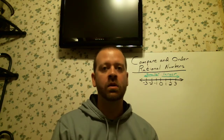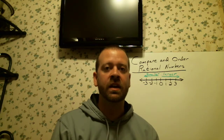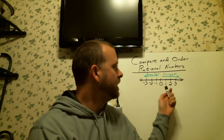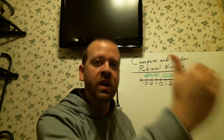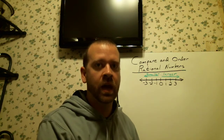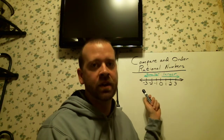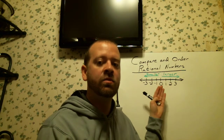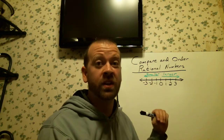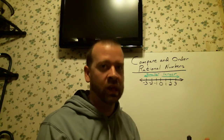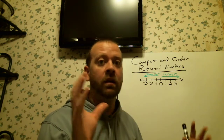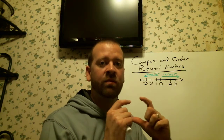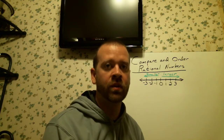First, we need to review the whole number line because this is very important for remembering positive and negative numbers. When you go right on the number line, numbers get bigger. Go left of zero, they get smaller — and left of zero you get negative numbers, right of zero you get positives. Remember: when dealing with negative numbers, the further left you go from zero, the smaller the number is. The bigger the number on the negative side, the smaller the actual value is. That is key when comparing and ordering rational numbers.